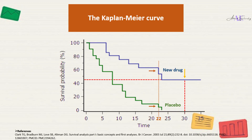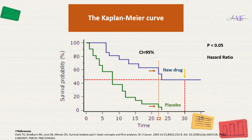However, in order to say that there is a significant difference between the two groups, the confidence interval should be at least 95%. It is also recommended to calculate other statistical measures such as the p-value and the hazard ratio to confirm statistical significance.